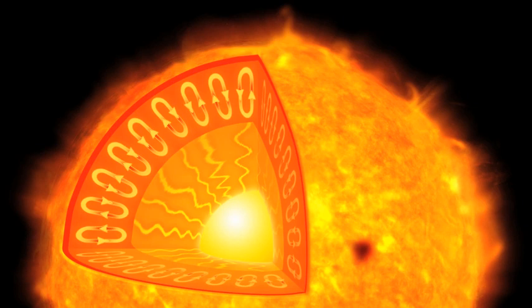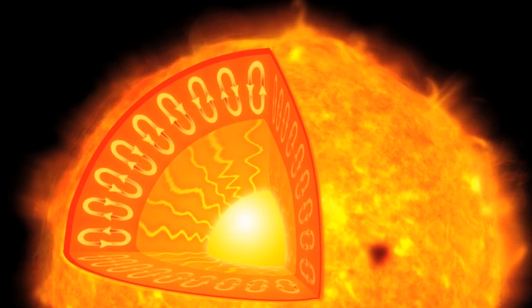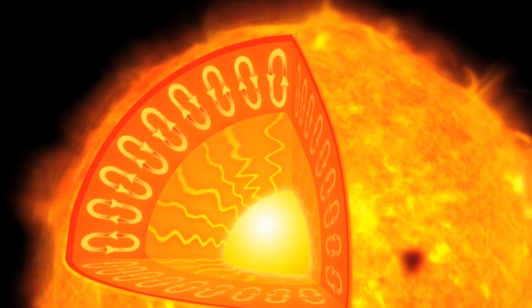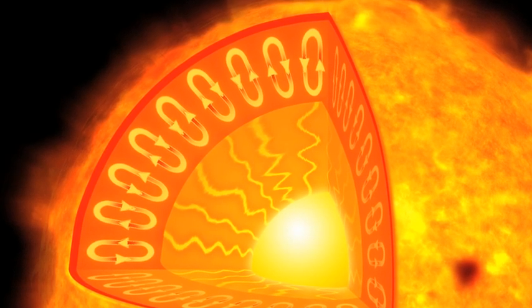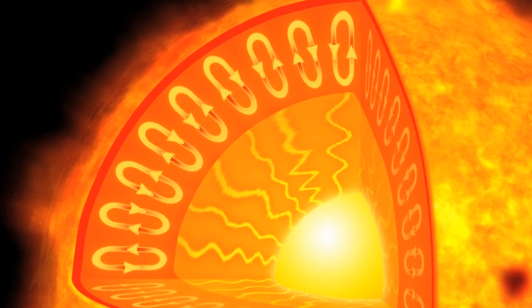The inside of a star is made of layers. There's a zone where the star's energy moves outwards, and another where the energy circles up and down. Many scientists believe that stars' magnetic fields are produced in the area where these two layers meet.